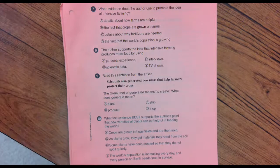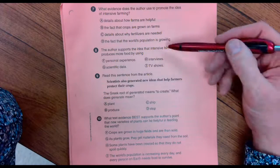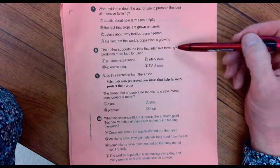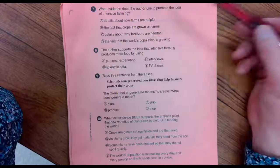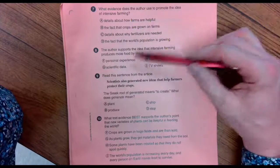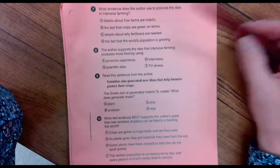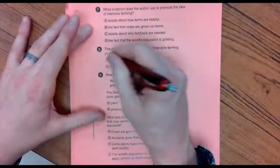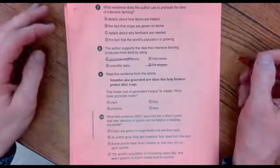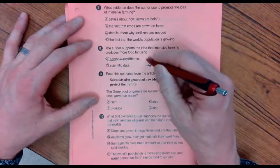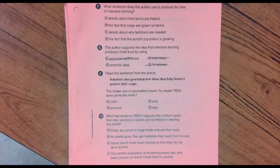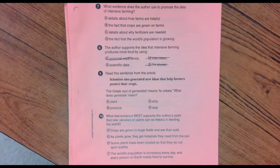Number eight. The author supports the idea that intensive farming produces more food by using personal experience, scientific data, interviews, or TV shows. Now, these two things weren't even in an article. I'm not even sure about this one either. I think there's only one choice that's even feasible if you've read the story well.